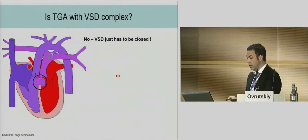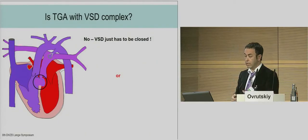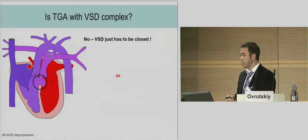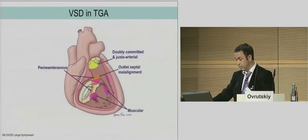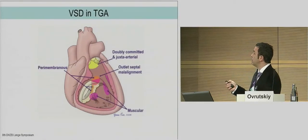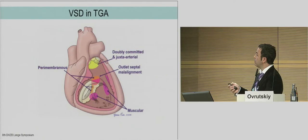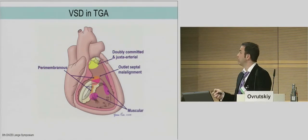TGA with VSD — is it complex? If somebody asked me, I would say probably no, the VSD just needs to be closed. But I would also say yes, because we know there are different types of VSD: double committed outlet, muscular, perimembranous, and so on. It is extremely important to know the VSD type before the operation.